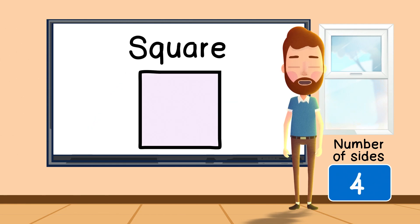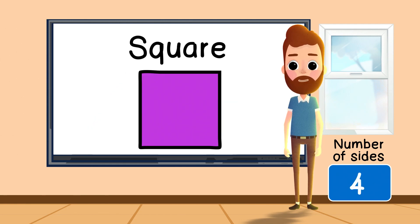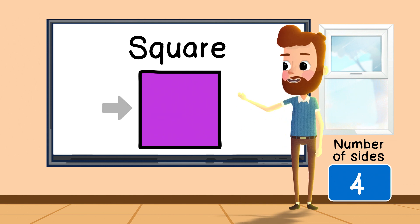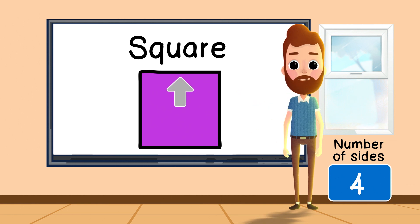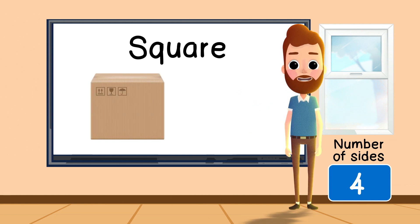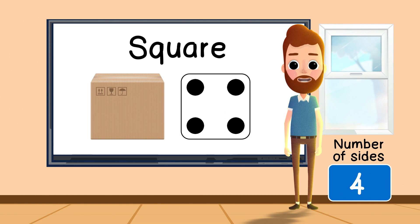A square has four sides. Side one, side two, side three, and side four. A square is the shape of a box, and a dice.